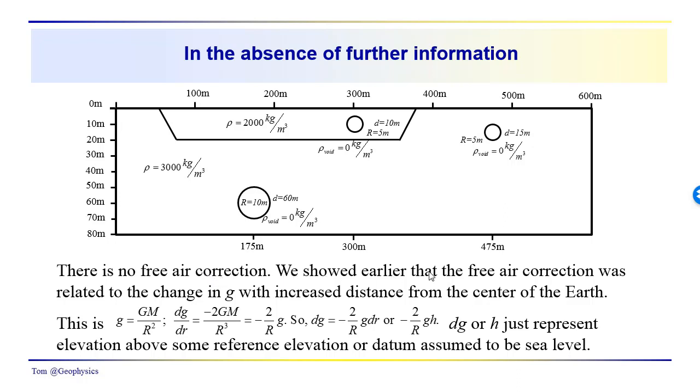We showed earlier that the free air correction was related to the change in g with increased distance from the center of the earth. So we have this as our acceleration due to gravity, just from Newton's universal law of gravitation. We take the derivative of this, we get dg/dr.